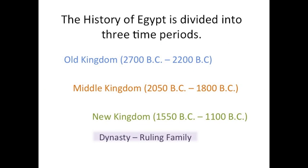The history of Egypt is divided into three time periods: the Old Kingdom from 2700 BC to 2200 BC, the Middle Kingdom from 2050 BC to 1800 BC, and the New Kingdom from 1550 BC to 1100 BC. During these different kingdoms, the land passed from one dynasty or ruling family to another, but it mostly remained unified.